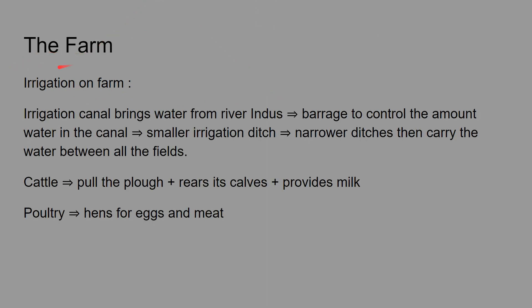On a farm, the main activity is irrigation. A farm needs water to grow crops. An irrigation canal brings water from the River Indus, and a barrage controls the amount of water in the canal, because too much or too little water can destroy crops. Smaller irrigation ditches branch from the canal and carry water between all the fields.